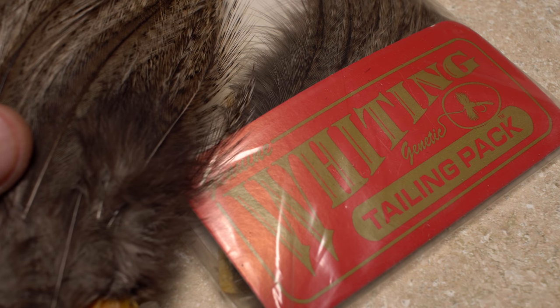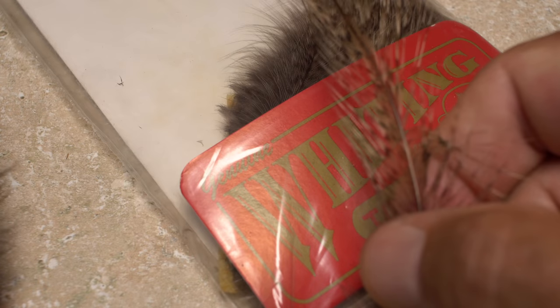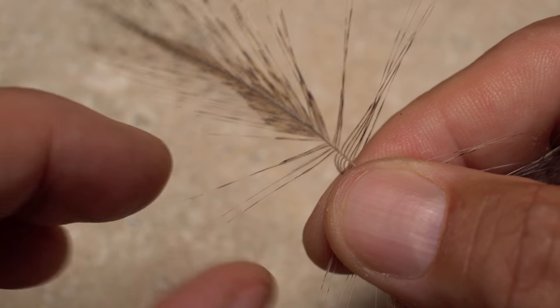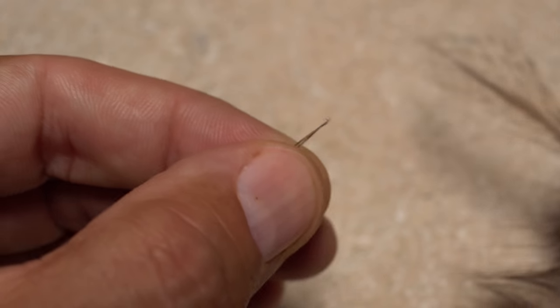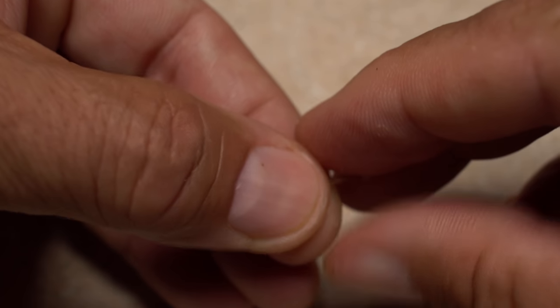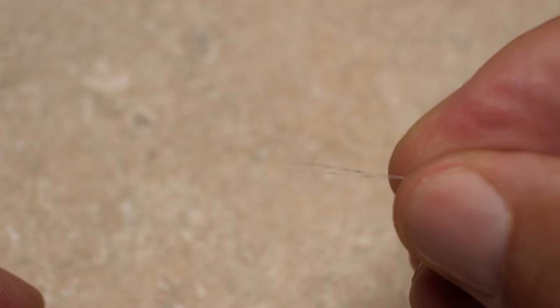In true Perdigon style, Coque de Leon fibers are used for the tail of the fly. After plucking a feather free from the skin, locate the nice stiff straight fibers, and separate out three or four. While keeping their tips aligned, strip them free from the stem and pass them to the fingertips of your right hand.